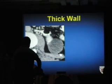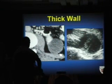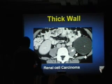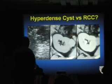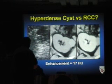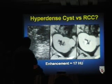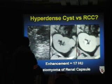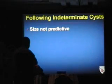Hyperdense masses that are atypical can show equivocal enhancement of 10–20 HU. We use 20 HU as an unequivocal cutoff — 10 to 20 is equivocal, under 10 is no enhancement. This case was hypoechoic on ultrasound, uncertain if cystic or solid. A limited resection revealed a benign renal capsuloma — rare but it exists. Size is not predictive and growth is not predictive when following indeterminate cysts; morphological change is the key.